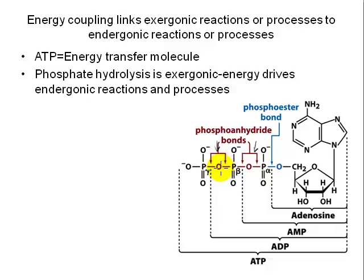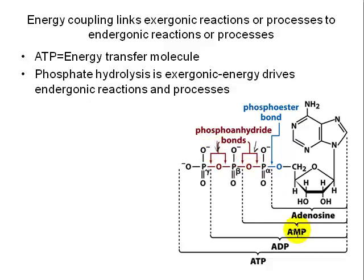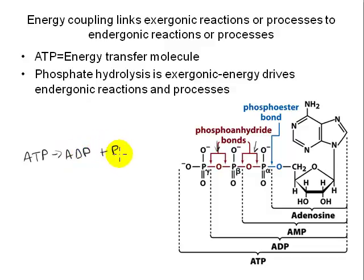Hydrolysis can involve only the terminal phosphate, in which case ATP is hydrolyzed to yield ADP and an inorganic phosphate ion. Or two phosphates can be hydrolyzed, resulting in adenosine monophosphate — AMP — and a pyrophosphate molecule consisting of two inorganic phosphate ions linked together. The most prevalent reaction is ATP being hydrolyzed to ADP and inorganic phosphate. The cell links that exergonic reaction to endergonic cellular reactions and processes via energy coupling, where the energy released from the exergonic reaction provides the input required for the endergonic reaction — such as moving a motor protein, operating a sodium-potassium pump, or building a protein.